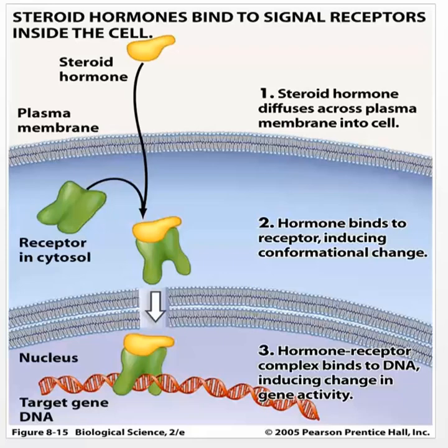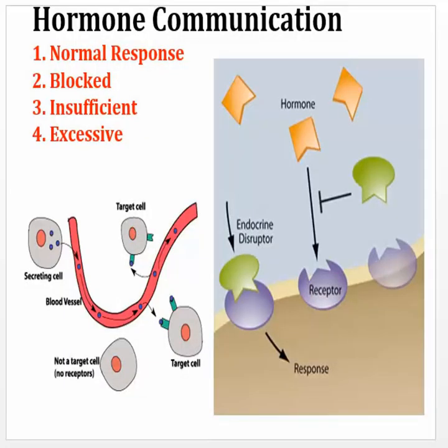There are different things that can happen with hormone communication. The first is a normal response: hormone is produced, travels to the cell, goes to the receptor like a lock and key, and information is transferred into the cell for gene translation or action on the DNA. But we can also have blocked communication. Those xenobiotics — substances foreign to life, also called endocrine disruptors — can go into the receptor site for estrogen or progesterone and block it, so you're no longer getting a signaling mechanism inside the cell.